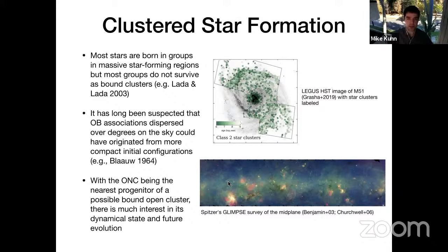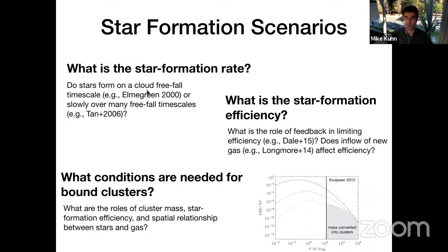Important open questions include: what is the star formation rate — do stars form quickly on a single freefall collapse timescale, or slowly over multiple timescales if clouds are supported by turbulence? What is the star formation efficiency in a particular cloud, and how is feedback from star formation affecting it? And what conditions produce bound clusters? Most massive star forming regions don't end up forming a bound cluster, so which ones do?